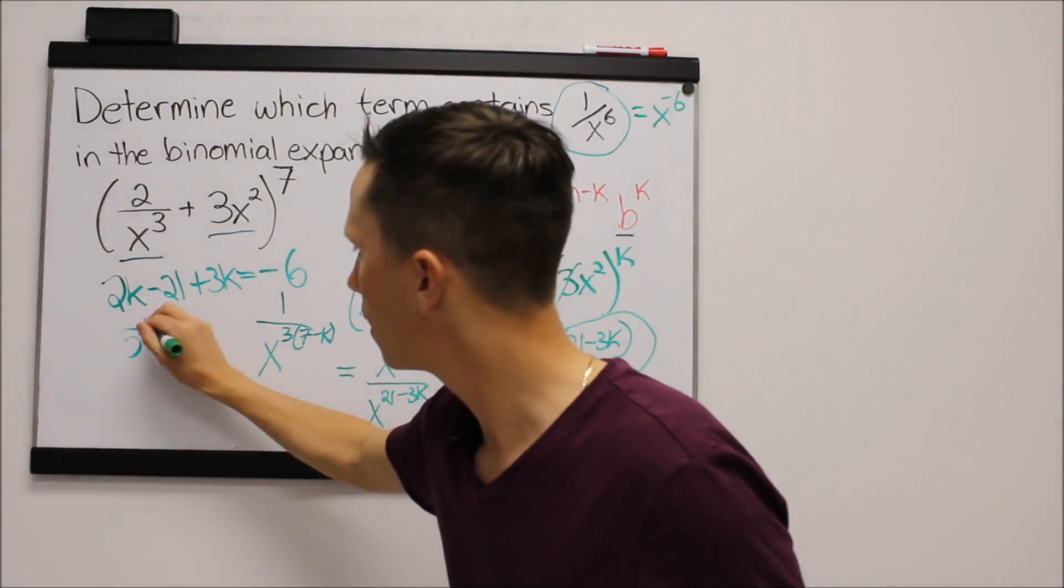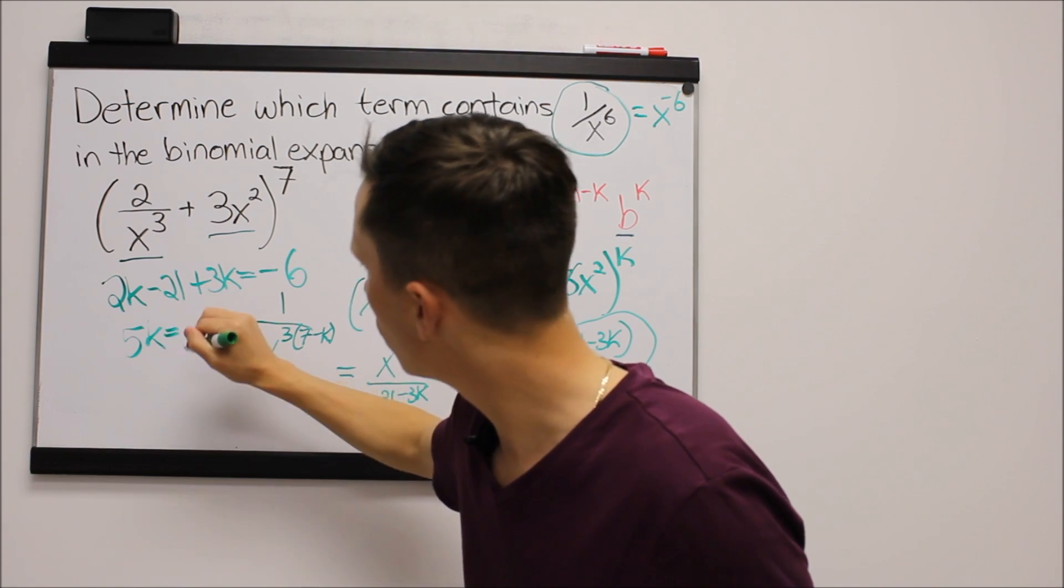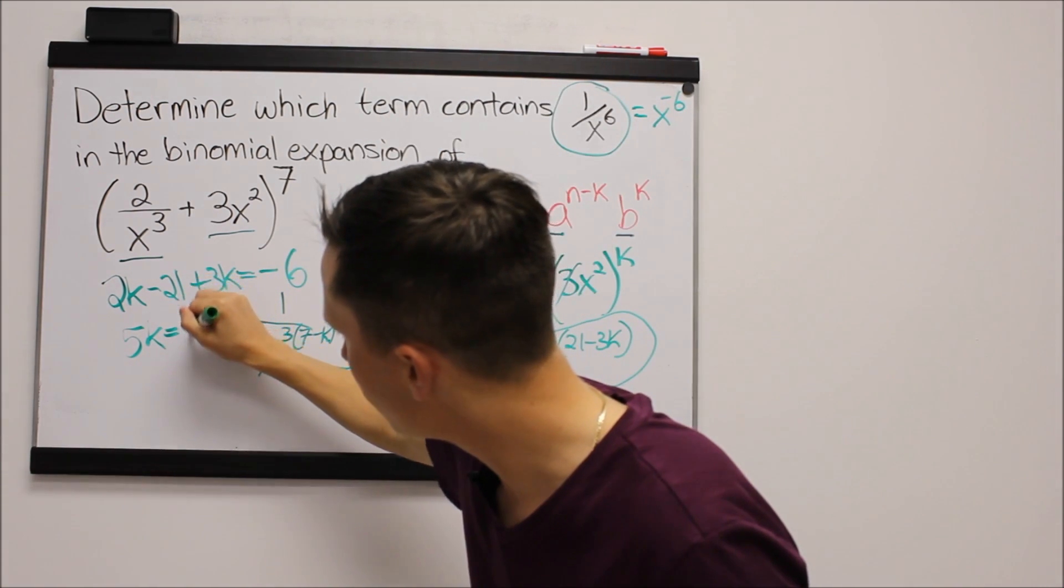Simplify this, we get 5k equals...add the 21 over here, and we get 15.